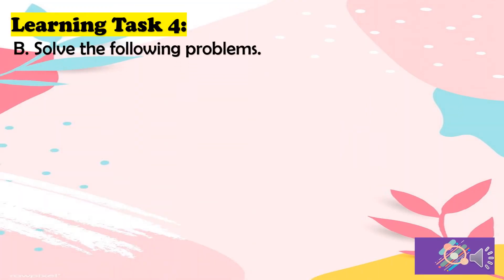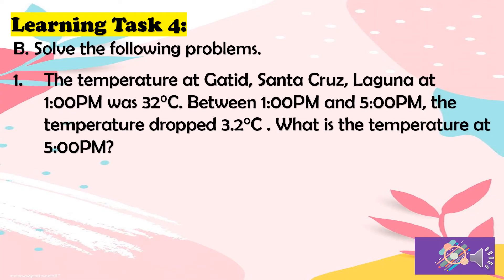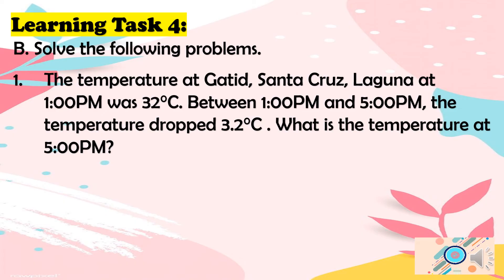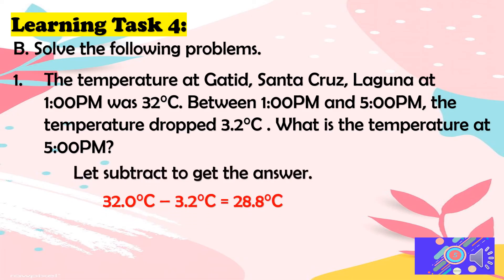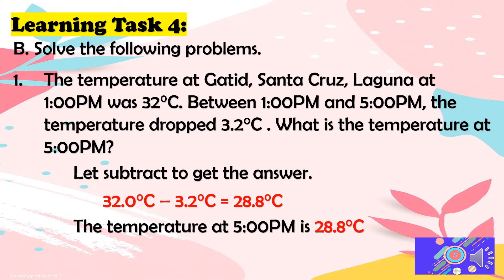For letter B, solve the following problems. Number 1: the temperature at Gatid, Santa Cruz, Laguna at 1 p.m. was 32 degrees Celsius. Between 1 p.m. and 5 p.m., the temperature dropped by 3.2 degrees Celsius. What is the temperature at 5 p.m.? To answer, we subtract: 32.0 degrees Celsius minus 3.2 degrees Celsius equals 28.8 degrees Celsius. So the temperature at 5 p.m. is 28.8 degrees Celsius.